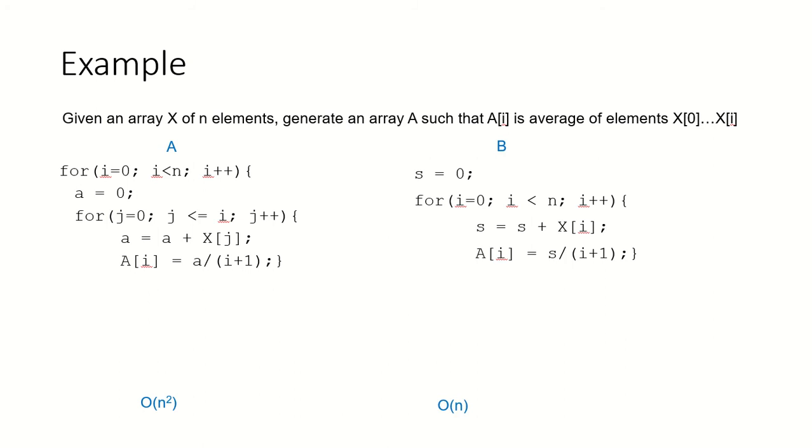Suppose we have an array X of n elements and we have to generate an array such that A[i] is the average of elements X[0] to X[i].